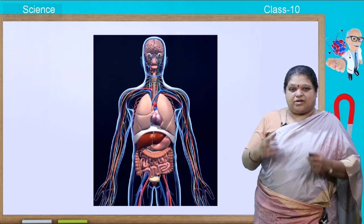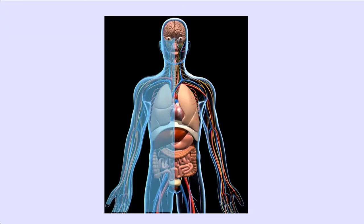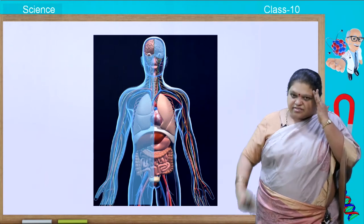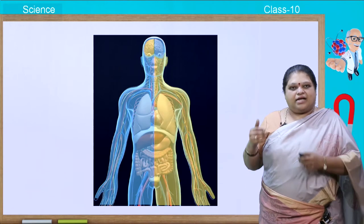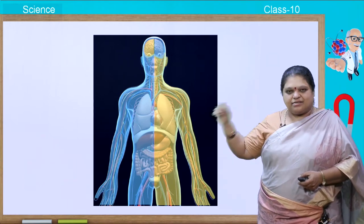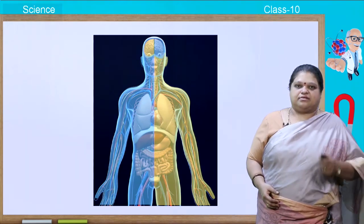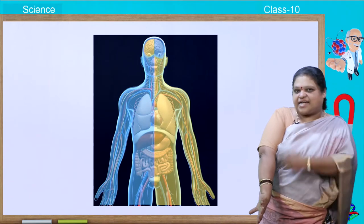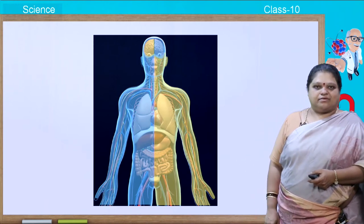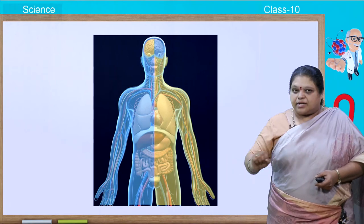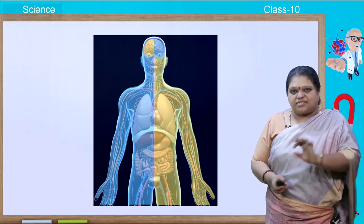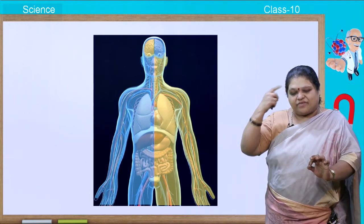The right side of the body is controlled by the left part of the brain, and the left side of the body is controlled by the right part of the brain. For example, if a person has a stroke on the right side of the body, it means the left part of his brain is affected. If you write with your right hand, the left side of the brain controls that activity. If a person is left-handed, the right hemisphere helps him.